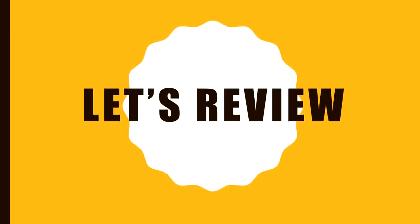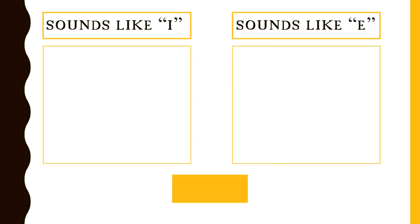Let's review. When a word is shorter and has Y at the end, the Y sounds like I. When a word is longer and has Y at the end, it will sound like ee.